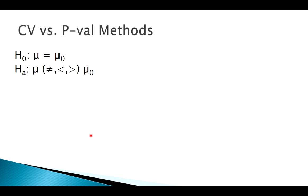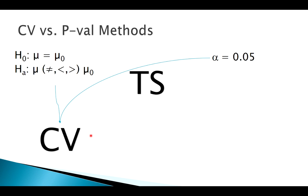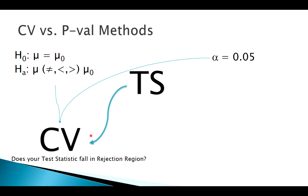Let's think about these two methods. We state our hypotheses, state alpha, then calculate our test statistic from our data. For the critical value method: we take alpha and the type of test, which establishes our critical value; from that we establish our rejection region and see whether our test statistic falls in it. Some people like this method because it's more visual — you're drawing a picture of the rejection region.